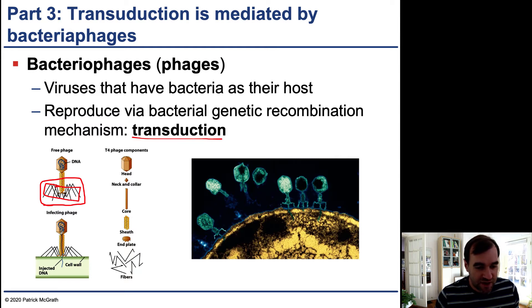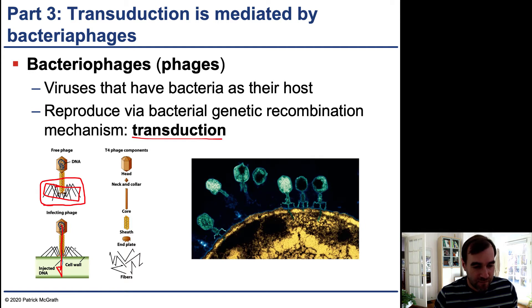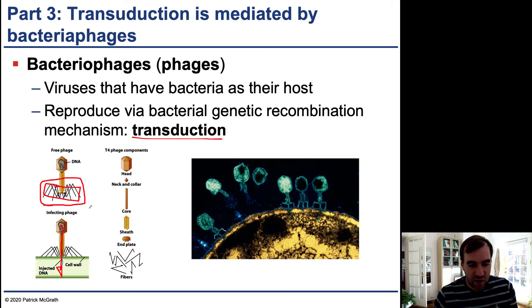Once it attaches, the phage is able to take DNA or RNA and inject that into the bacterial cell. This process of injecting DNA into the cell allows the virus to take over the bacterial host cell.